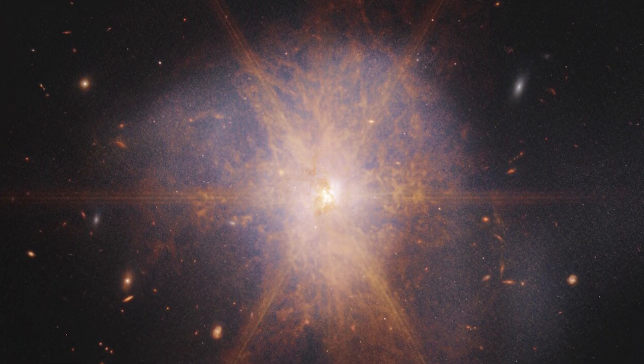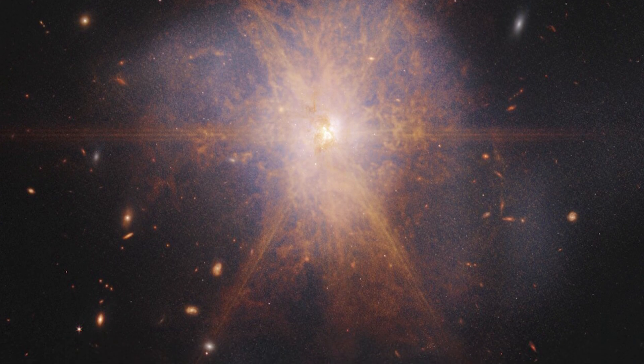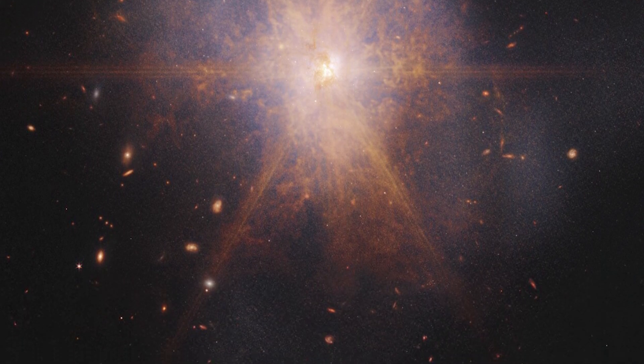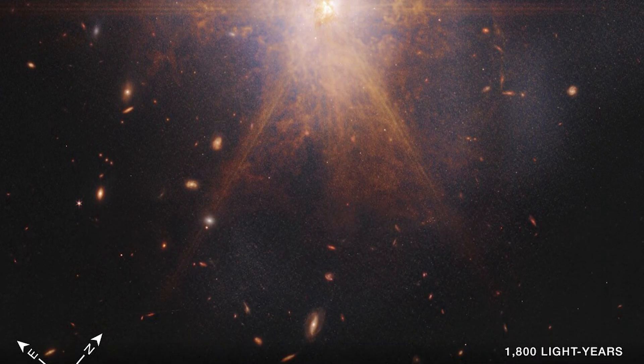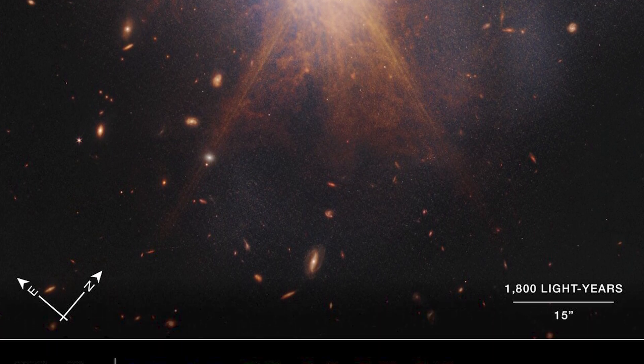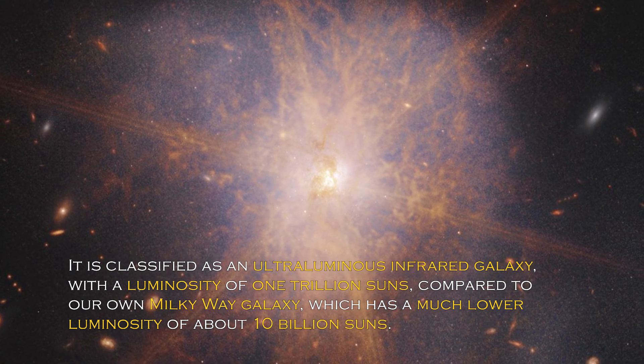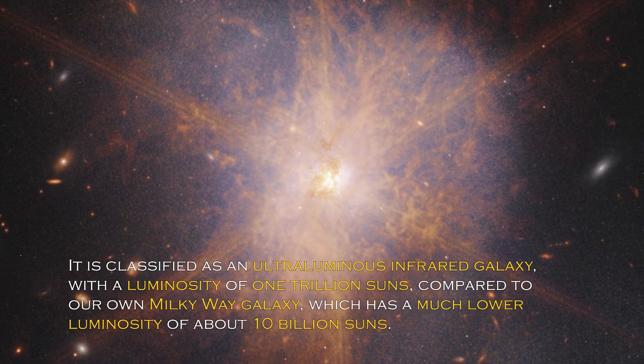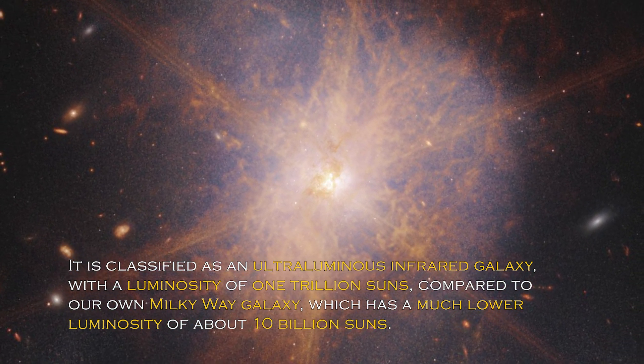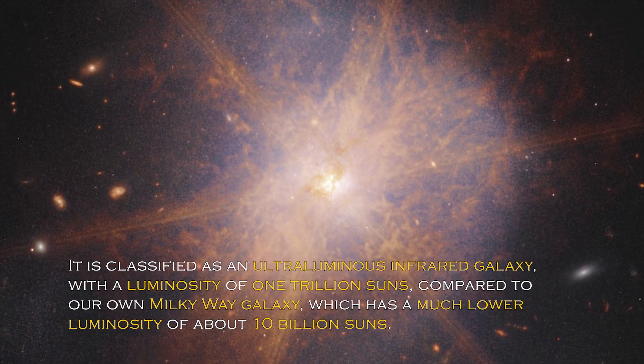When two spiral galaxies merge, the phenomenon known as ARP 220 shines brightest in the infrared, making it perfect for observation by the James Webb Space Telescope. It is classified as an ultra-luminous infrared galaxy, with a luminosity of trillion suns compared to our own galaxy, the Milky Way, which has much lower luminosity of about 10 billion suns.